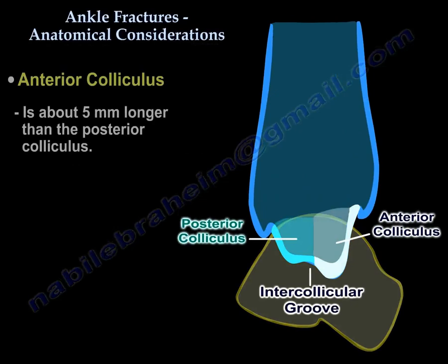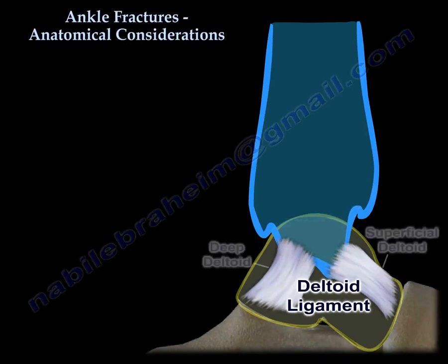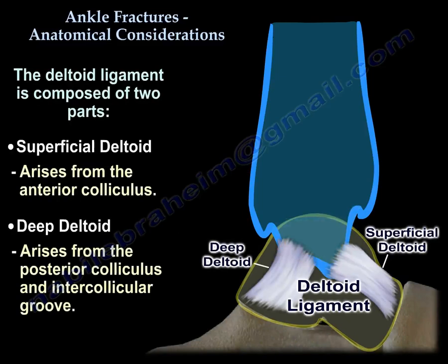The anterior colliculus is about 5 mm longer than the posterior one. The deltoid ligament provides medial support to the ankle and is composed of two parts: the superficial deltoid ligament, which arises from the anterior colliculus, and the deep deltoid, which comes from the posterior colliculus and the inter-collicular groove. The deep deltoid is an intra-articular ligament that cannot be repaired, but can be debrided.